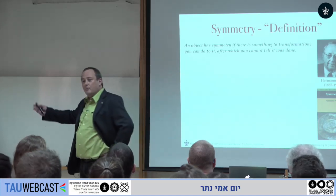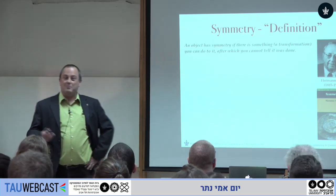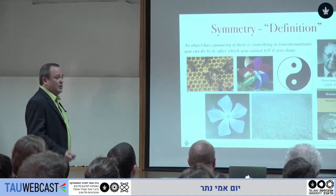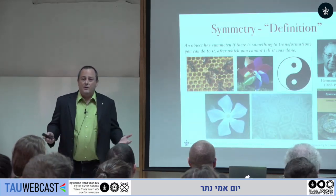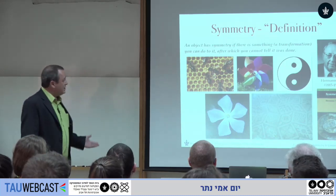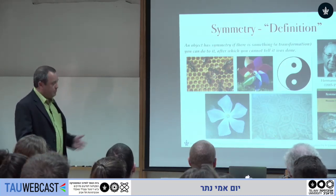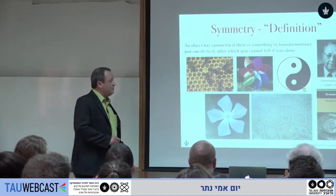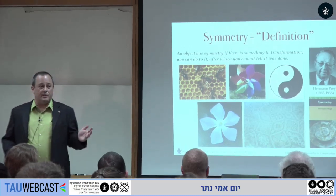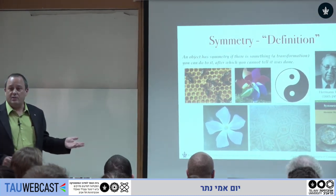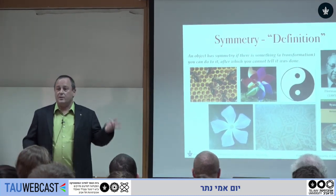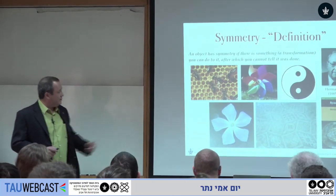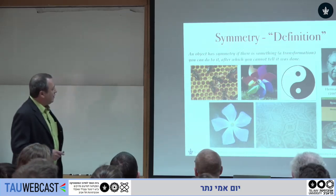So this is an object which is invariant under some kind of transformation, and as such it has symmetry. We enlarge the notion of symmetry much beyond just mirror reflections. For example, the famous yin-yang symbol is not symmetric under mirror reflection, nor under a two-fold rotation, but if you apply a two-fold rotation and then permute the two colors, you wouldn't know that the operation was done — so it's symmetric under that.